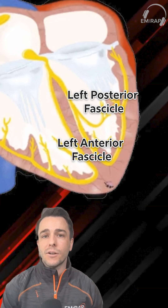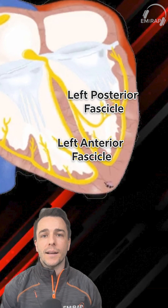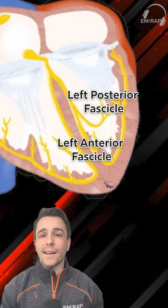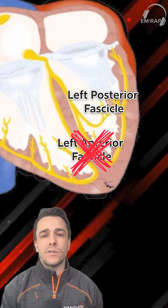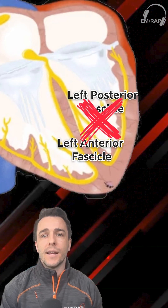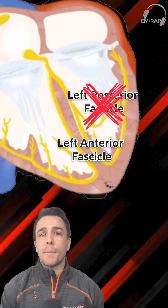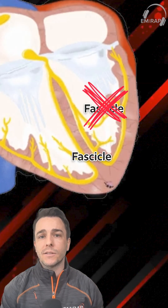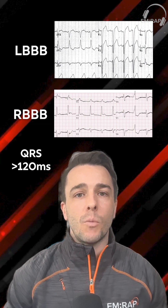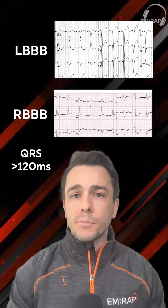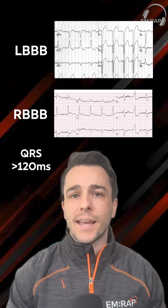A left anterior fascicular block is when we knock out that anterior fascicle from some sort of ischemic event. Same thing with that posterior fascicle. We're used to bundle branch blocks being seen on our ECGs as widening of that QRS, but with fascicular blocks, that's not the case.